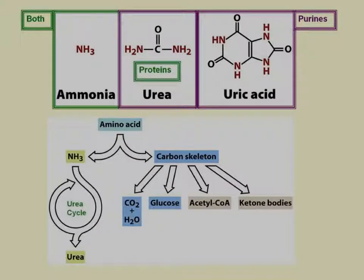When an amino acid is used in the citric acid cycle or in gluconeogenesis, the amino group is taken off, producing nitrogen. That nitrogenous component is excreted from the body because too much nitrogen is harmful. Looking at the different components of nitrogenous waste, ammonia can come from both proteins and purines.